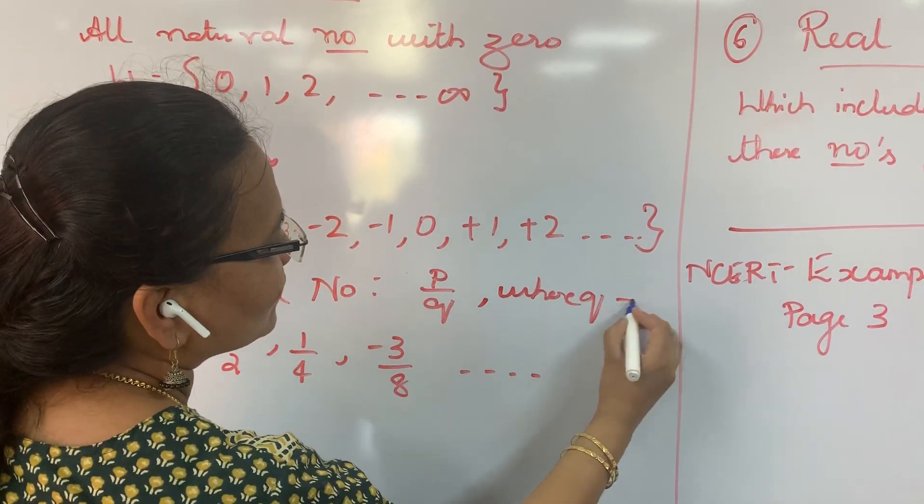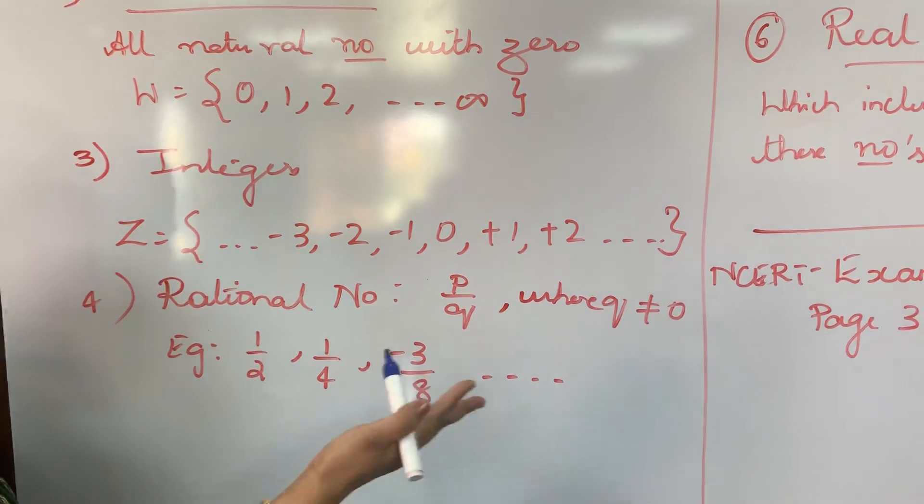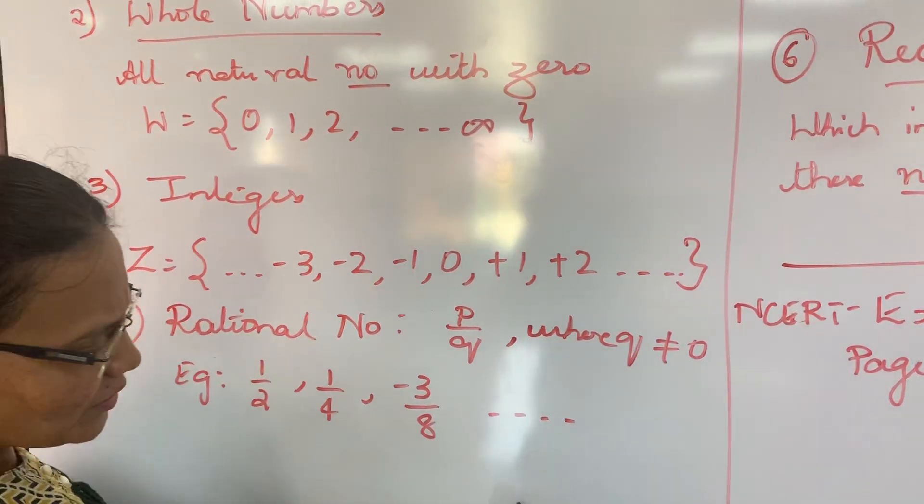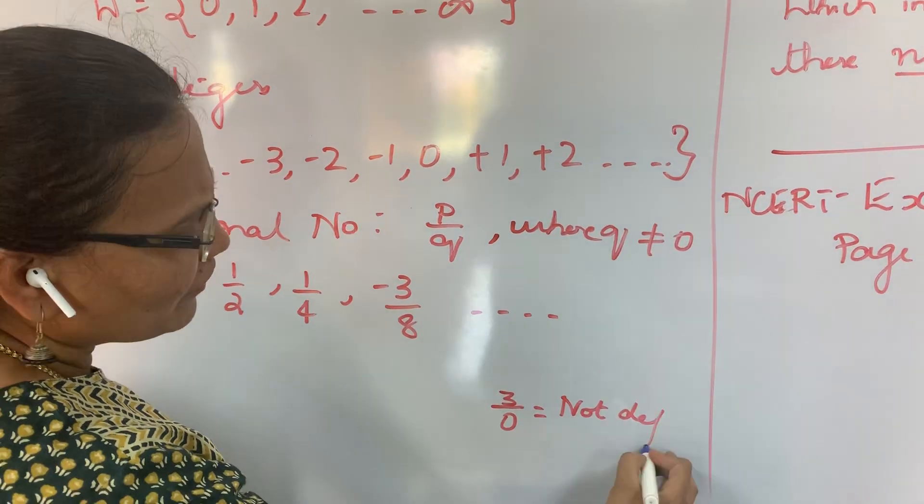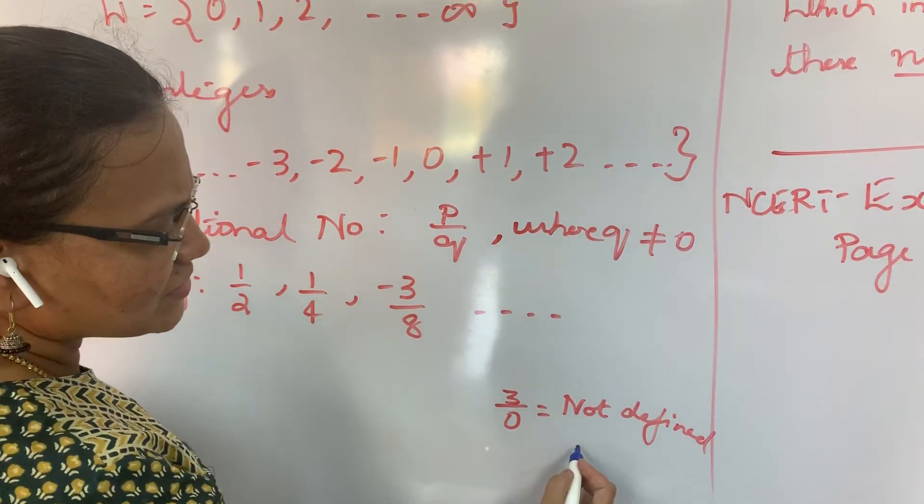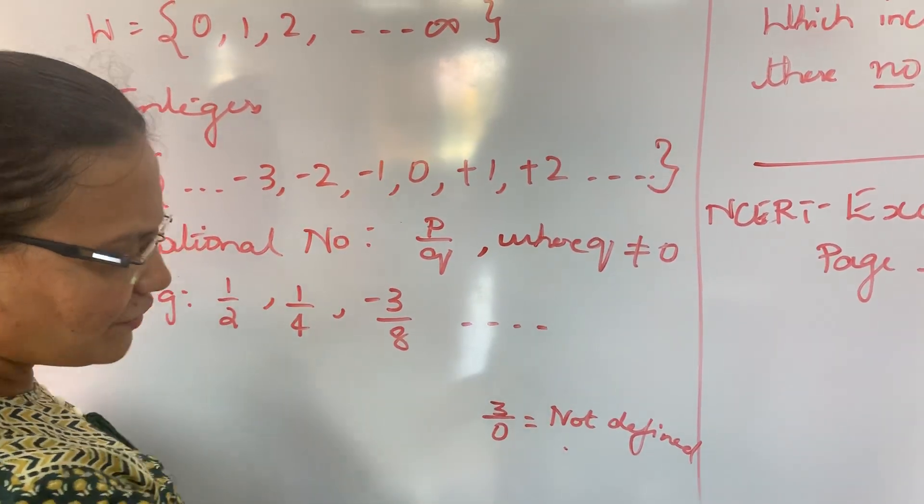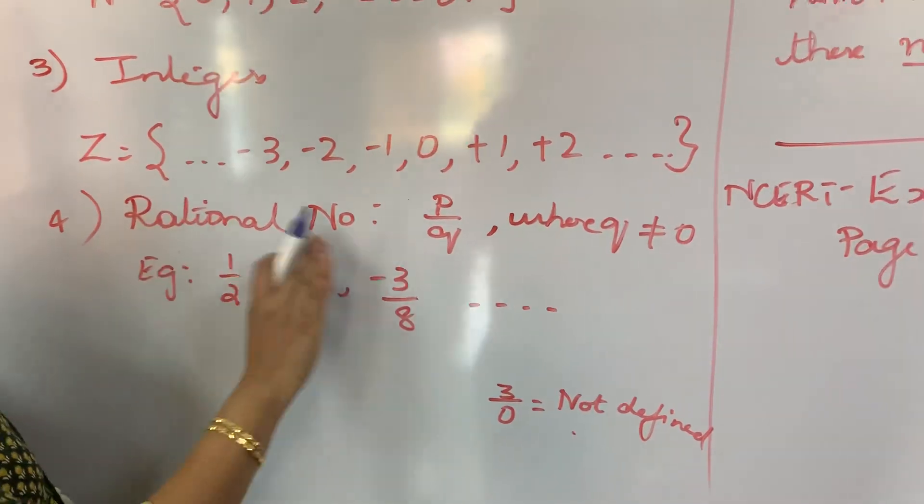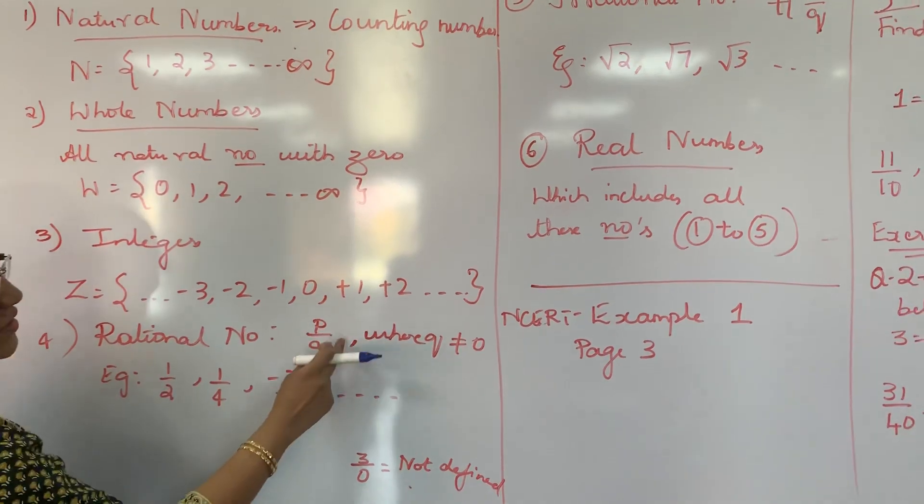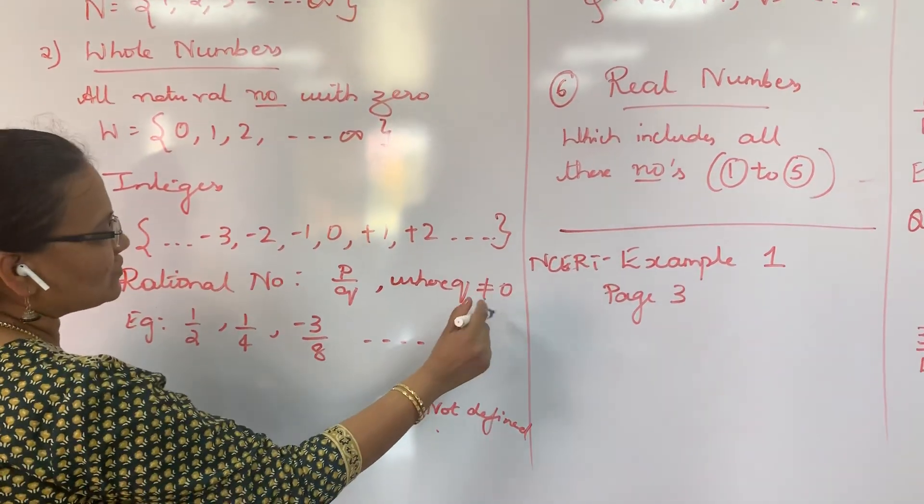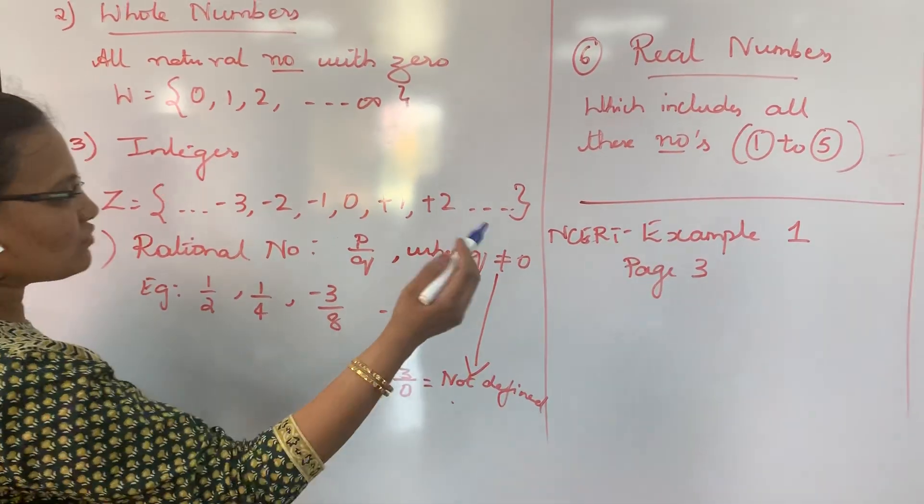W: 0, 1, 2 up to infinity. Rational numbers can be expressed in the form of P by Q where Q is not equal to 0. Why we say Q is not equal to 0? Because if we write 3 by 0, this is not defined. We don't know the value for it. We just write not defined or infinity.